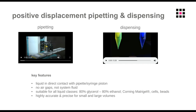The big advantage of using this method is that it's suitable for all liquid classes — from very volatile things like 80% ethanol up to very viscous materials, but also jelly-like materials like Corning Matrigel. This method of pipetting and dispensing is extremely accurate, even at the smallest volume.